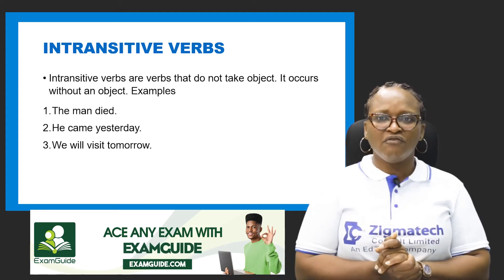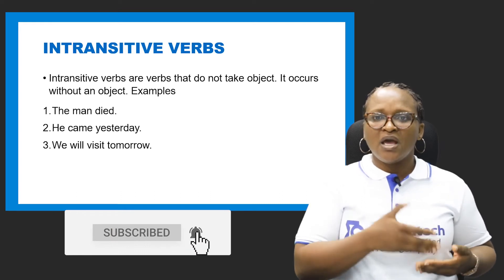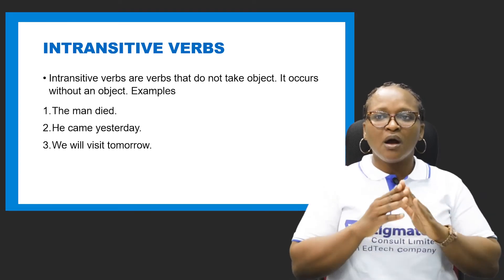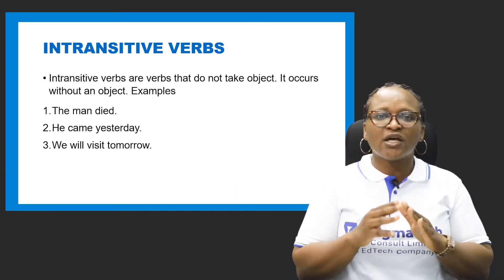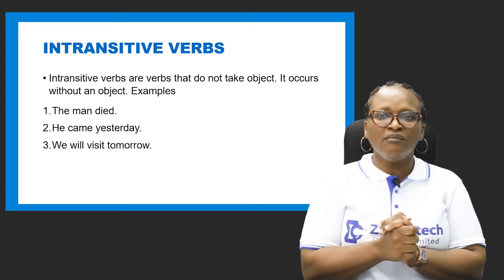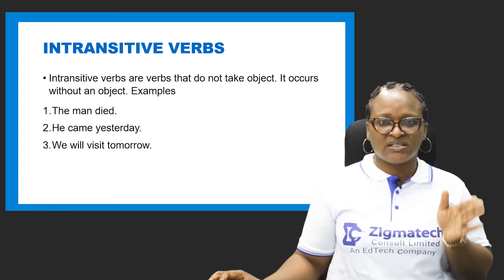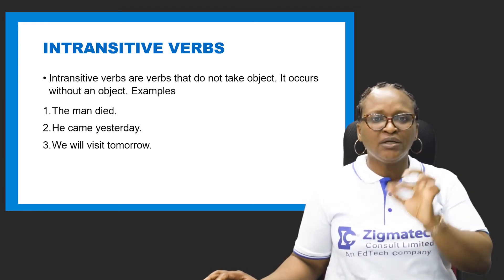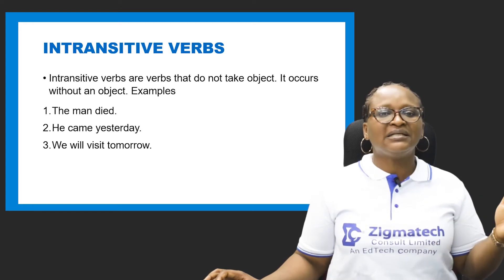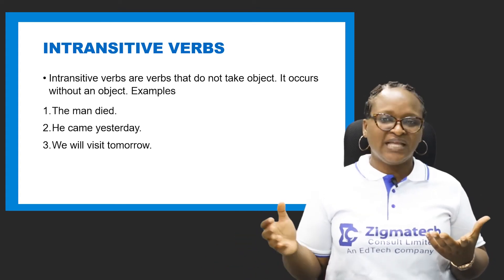Intransitive verbs speak the opposite — they do not take objects. Once you see there is no object, you know the verb is intransitive. When the verb ends the sentence, that verb is intransitive. Example: 'The man died.' Died ended the sentence and there is no object that receives the action.